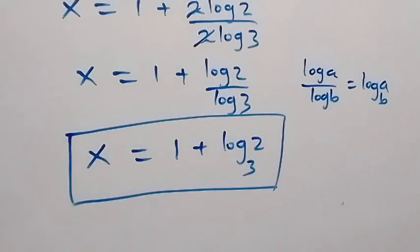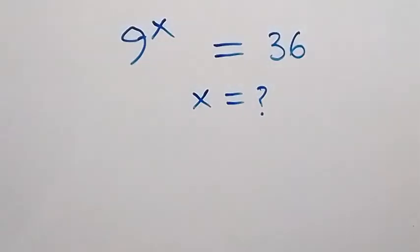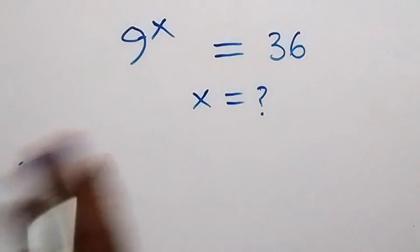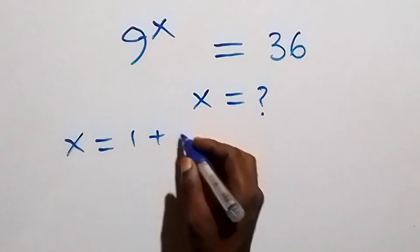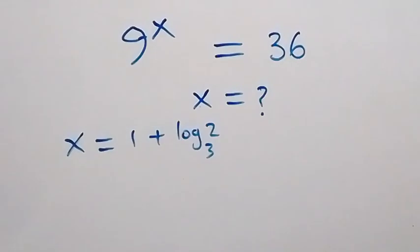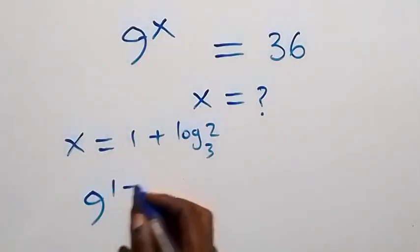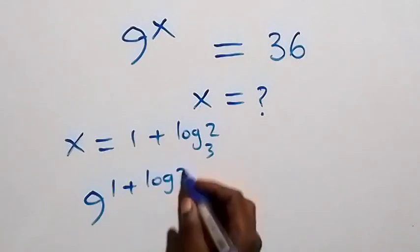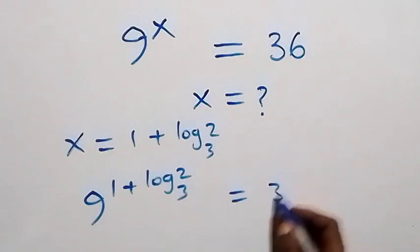Now let's check to confirm if this satisfies the given problem. We substitute the value of x, which is x equals to 1 plus log 2 to base 3. Then this becomes 9 raised to power 1 plus log 2 to base 3 — will this equal 36?